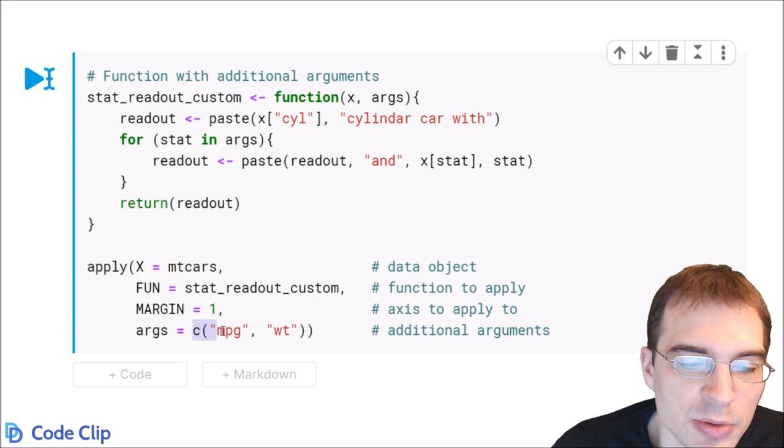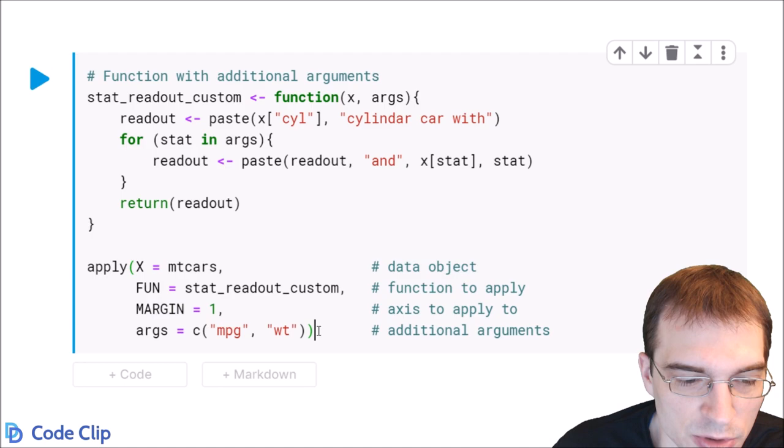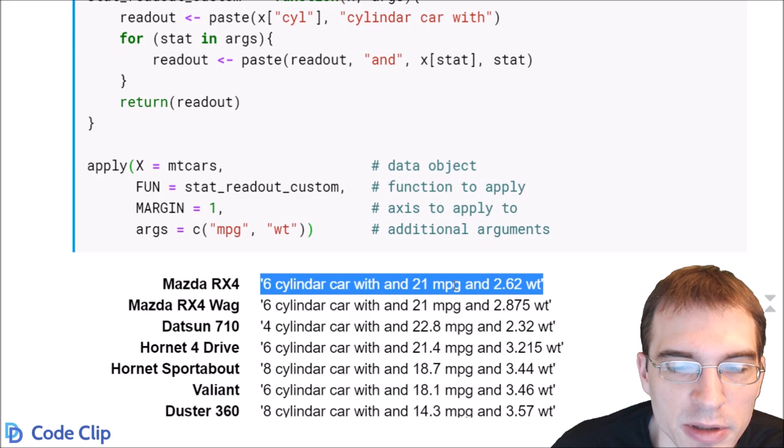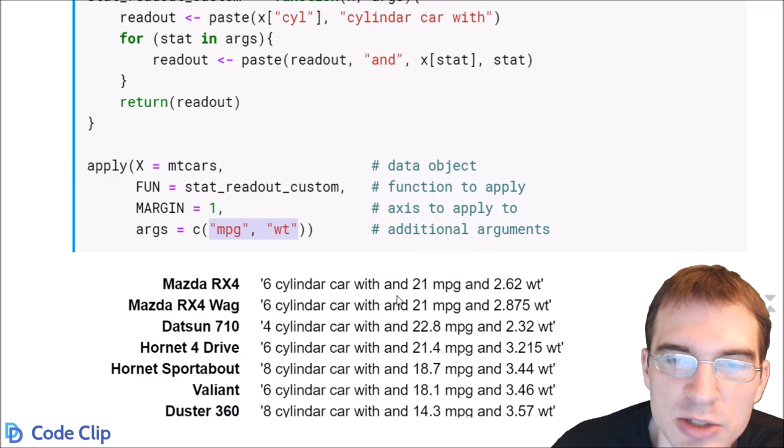In this case, we're going to set them equal to some different columns that we want to print out values for. So we're going to pass in mpg and weight. So let's run this to apply our custom stat readout to the rows and see what the result is. You can see it's printed out some information again as character strings. But the extra information that's printed here was determined by our extra arguments. So since we passed in mpg and weight, those are the extra stats that were added into the sentence.